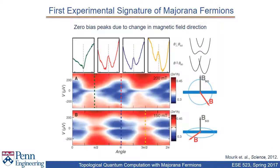Thus, when aligned perpendicular, that orientation suppresses Majorana fermions. Further verification is the change in zero-bias peaks due to magnetic field direction. In figure A, the magnetic field is in the plane of the substrate. When parallel to the nanowire, a zero-bias peak is present, as seen for angle pi — the red curve. The zero-bias peak is absent when the field is perpendicular to the nanowire and thus in the direction of the spin-orbit field, as seen for angle pi/2 — the green curve. In figure B, the magnetic field is perpendicular to the plane of the substrate, so for any direction with respect to the nanowire, the zero-bias peak is always present.